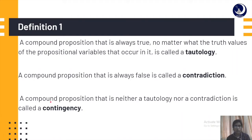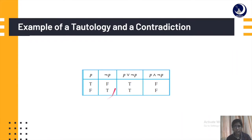A compound proposition that is neither a tautology nor a contradiction is called a contingency. For example, we can observe that this compound proposition has produced all true values, so we call this a tautology. This other compound proposition has produced all false values, so it is called a contradiction.